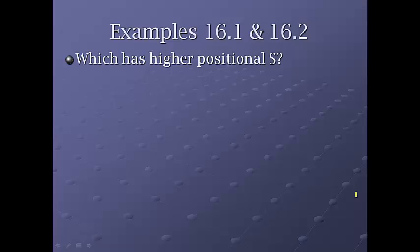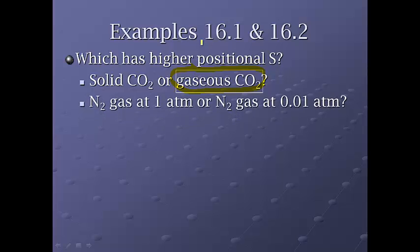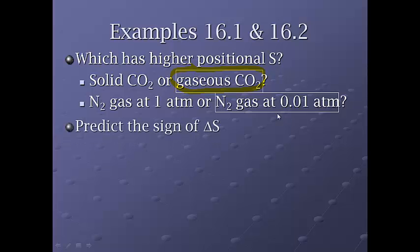All right, now some examples. If we just first look at these, these are 16.1 and 16.2, it says which one has a higher positional entropy? So in other words, which one has the greatest, more randomness? If we're looking at solid carbon dioxide or gaseous carbon dioxide, it's going to be gaseous carbon dioxide. You may have to circle some of these, your final answers here. Will nitrogen gas at 1 atm or nitrogen gas at 0.01 atm have more spontaneity? Well, it's going to be at 0.01 atm with a little bit less pressure. That will have higher positional entropy, mostly because it has more freedom to move around. So it's not squeezed together as much.